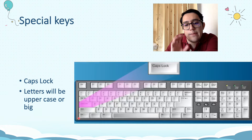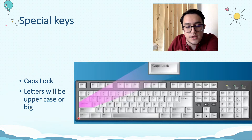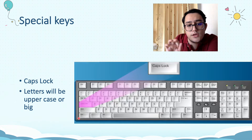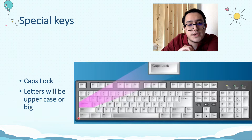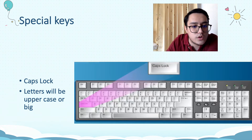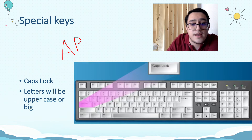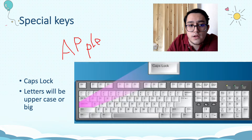But if you press Caps Lock again after typing, it turns off your Caps Lock, so your next letters are going to be small. So it will look like a mix — big letters at the start, then small ones after you press Caps Lock again. If you turn it on again, you can type big. So Caps Lock toggles on and off each time you press it.